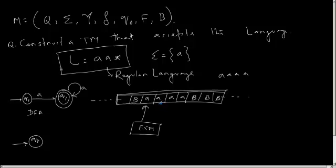You have to accept any string that has at least one A. So if I am reading A, I can just jump — I do not have to write anything. I can go and transition to the final state QF. Since the final state QF does not have any further transition, the Turing machine will stop. On a single transition, the Turing machine decides that it has to accept the string.